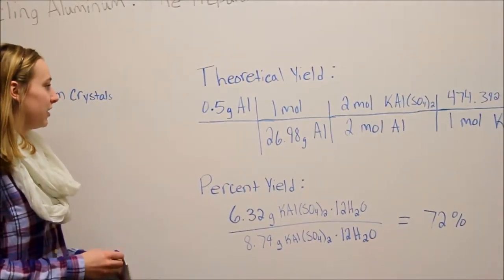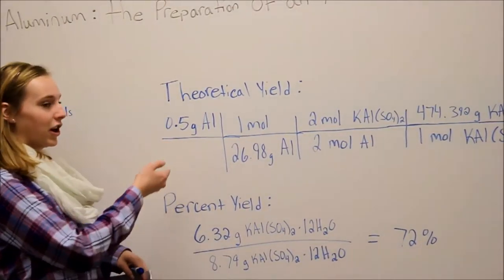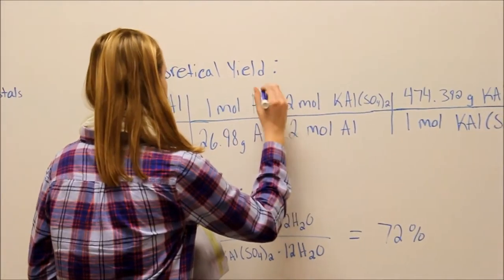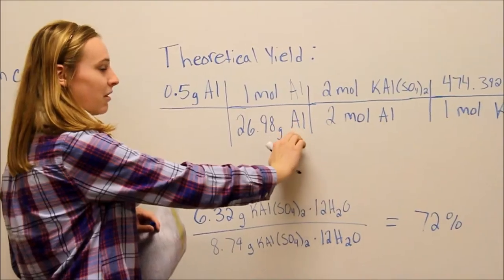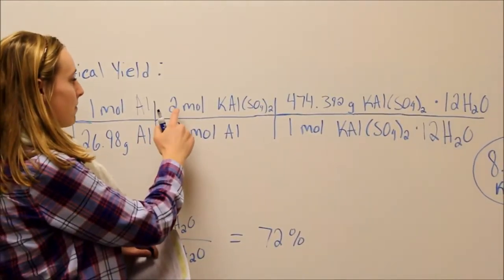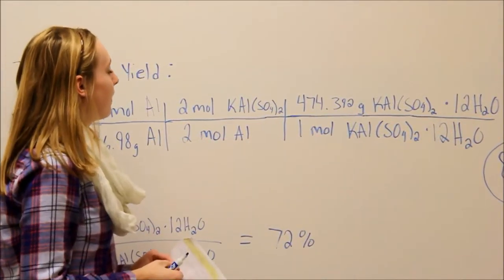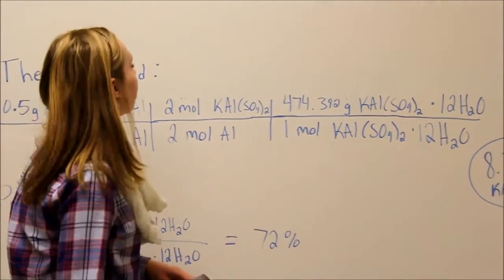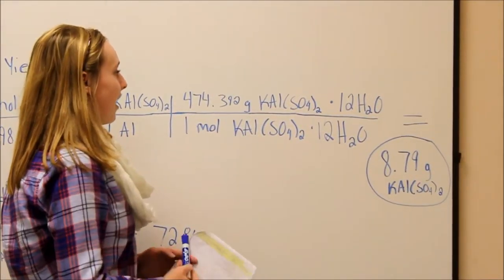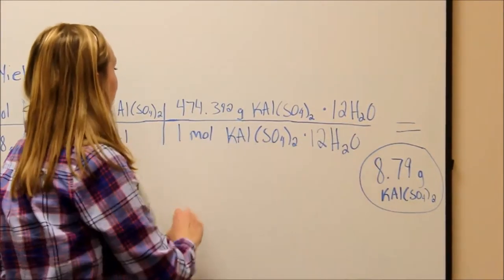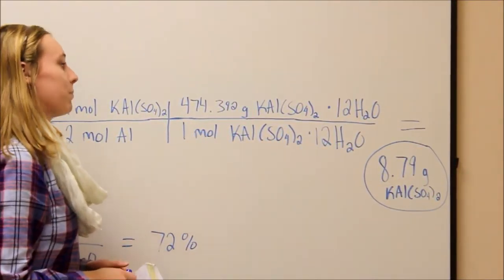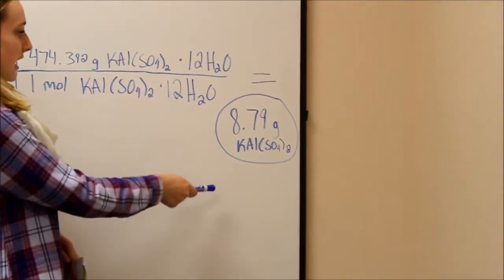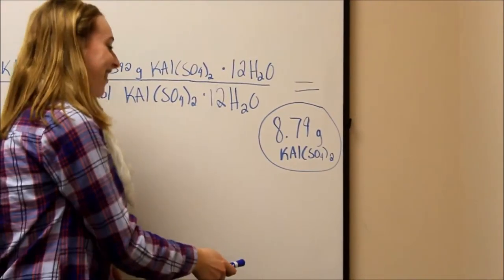To calculate our theoretical yield, we took the starting 0.5 grams of aluminum, multiplied by 1 mole of aluminum divided by 26.98 grams (molar mass of aluminum), then multiplied by the molar ratio of 2 moles of KAl(SO₄)₂ divided by 2 moles of aluminum. Then we used the molar mass of KAl(SO₄)₂·12H₂O, which was 474.392 grams, divided by 1 mole, and got 8.79 grams of KAl(SO₄)₂.